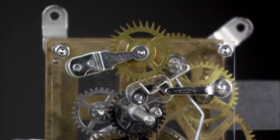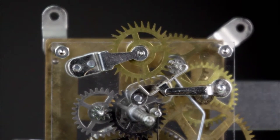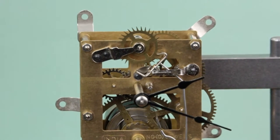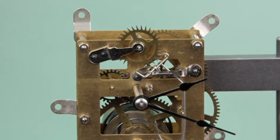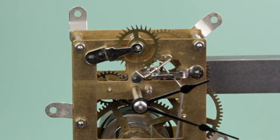The anchor recoil escapement has many variations, but they all function the same way. Remember that all escapements must alternately stop, then release the forward movement of the escape wheel in time with the pendulum. In a recoil escapement, the locking phase, where the forward movement of the escape wheel is stopped, is replaced by the recoil. The term recoil is used to describe the slight backwards movement of the escape wheel after each forward movement.